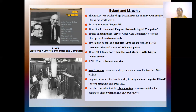It had a code name — you know, everything is coding during World War II — so it was called Project PX. It was the first general purpose electronic digital computer. They had used vacuum tubes — those big valves — to make this device work, and it did its operations in microseconds.